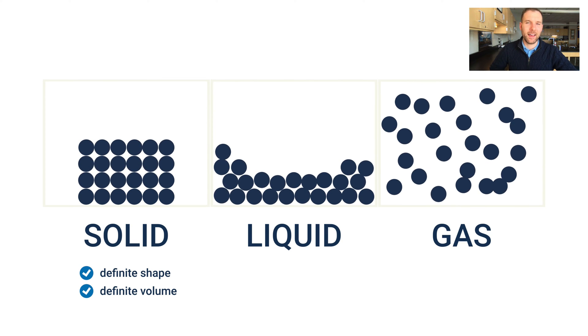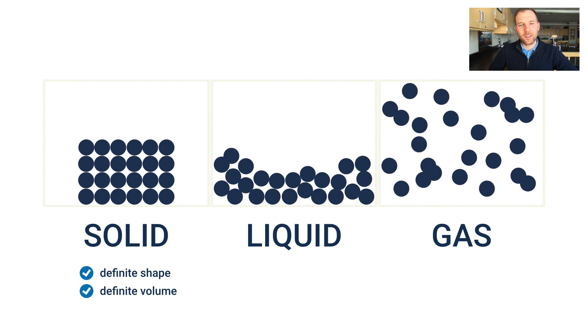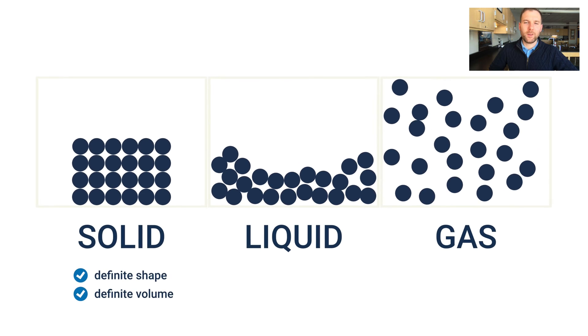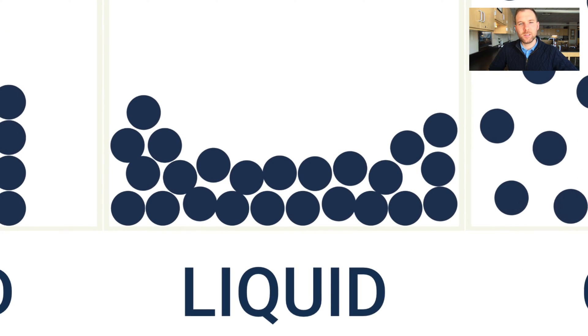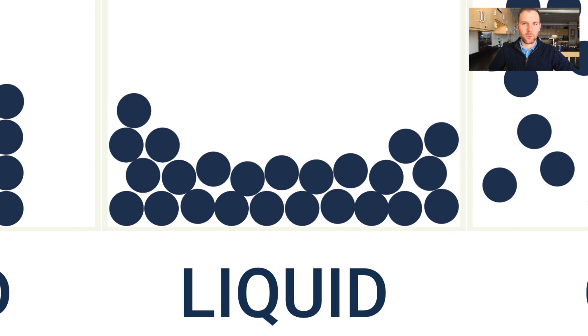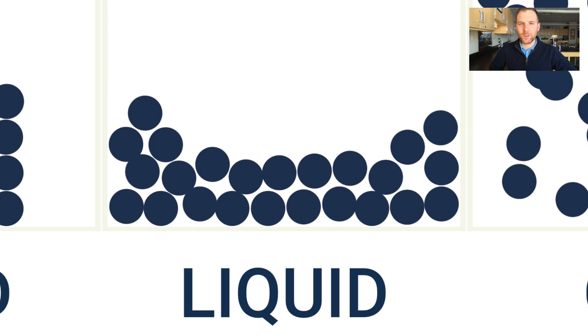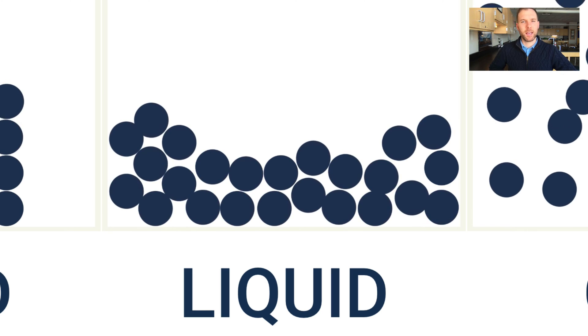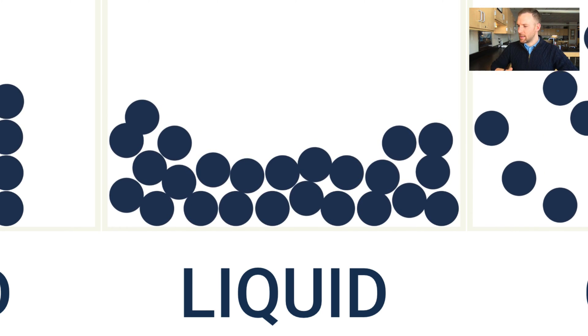A liquid's a little different. A liquid will still have a definite volume, but this is what changes: these particles start to flow around each other a little bit more and they start to take the shape of whatever container they're in.